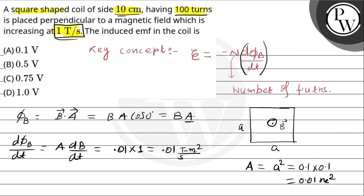So put these all values into this equation and let's find the induced EMF. Induced EMF is equal to minus 100 into 0.01, which is equal to minus 1 volt. Now we are interested in the magnitude of the induced EMF.